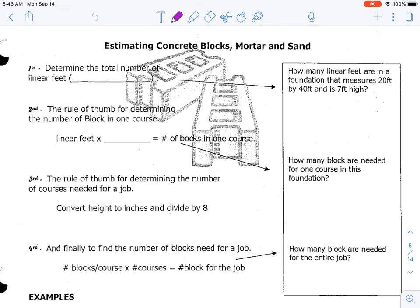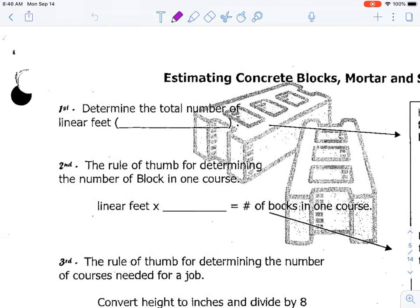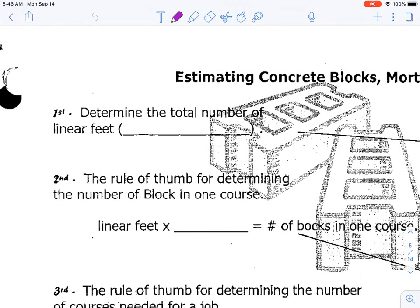So the very first thing you do in the process for determining or estimating concrete blocks is to determine the total number of linear feet. What that means in a structure is the perimeter around the outside of the building, or if you're just doing a wall it's just the bottom part of the wall. I always like to tell students that linear feet is the part that touches the ground. So linear feet is the perimeter.